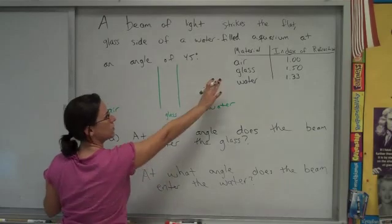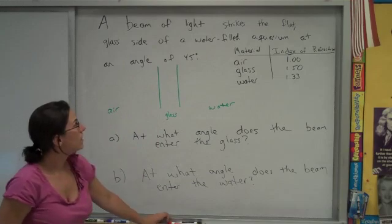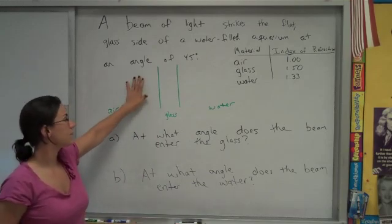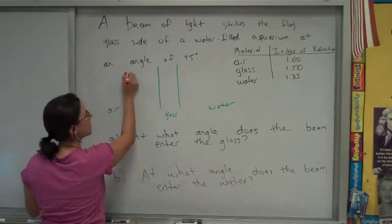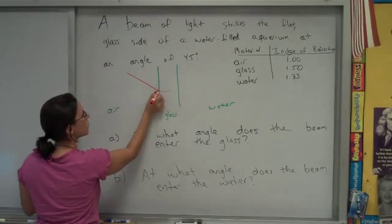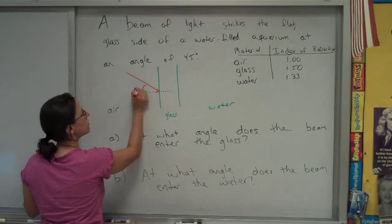Kind of a side view. Fish here, air out here. And we're given that the beam of light is hitting the outside at an angle of 45 degrees. So I have this light ray coming in. I'll go ahead and draw in my normal line and show that that's 45 degrees right there.